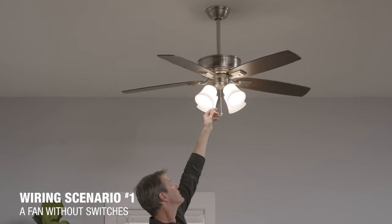The first wiring scenario is for rooms without a switch, so you'll use the two pull chains to turn on the fan and light fixture.